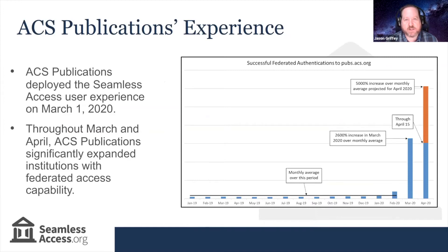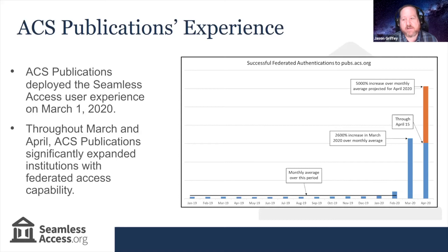ACS was one of the first implementers of Seamless Access and they went live in early March of this year. This was also driven by the fact that people were fleeing campuses in early March, so it was quite good timing. They saw a 2,600% increase in federated authentications in March and they doubled that in April for over a 5,000% increase in federated authentication. So we have evidence that if you make this easier via Seamless Access, people will use it.